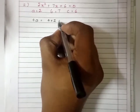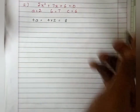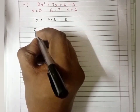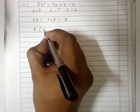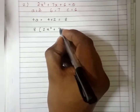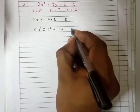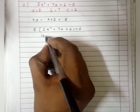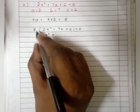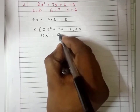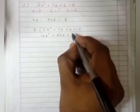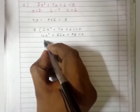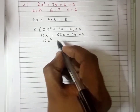Now we find the value of 4a: 4 times 2 is 8. So I should multiply the quadratic equation by 8 throughout: 8 × (2x² + 7x + 6) = 0, giving 16x² + 56x + 48 = 0.